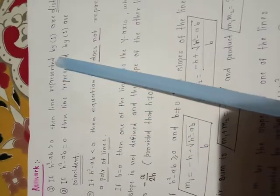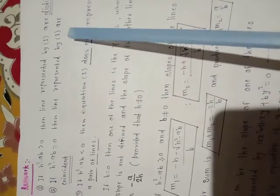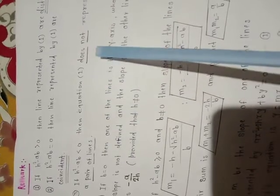If h² - ab is strictly greater than 0, then the lines represented by the equation are distinct. If h² - ab is equal to 0, then the lines are coincident. If h² - ab is strictly less than 0, then the equation does not represent a pair of lines.